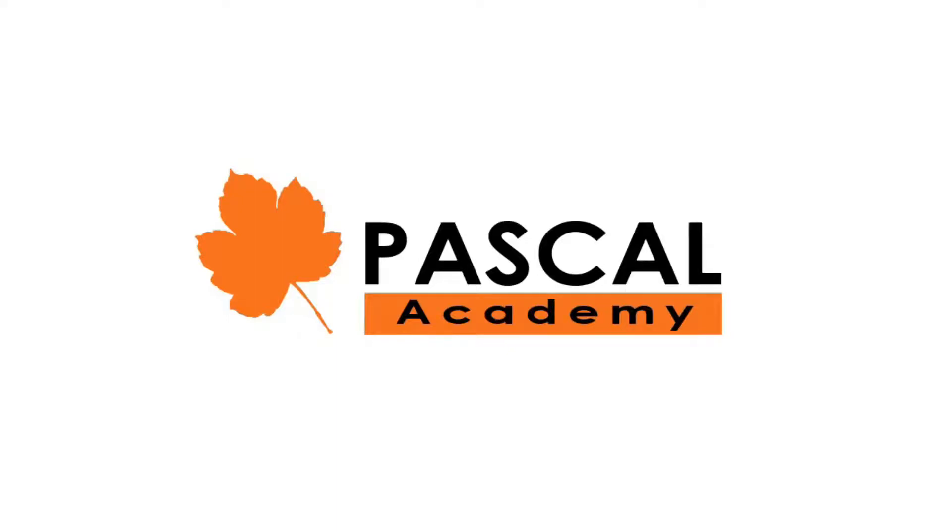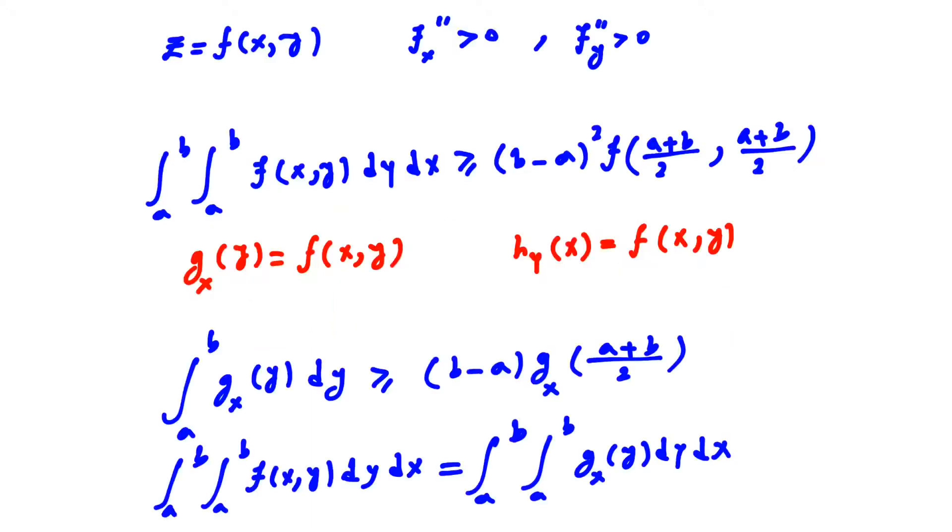In this video, we are going to use the Hermite-Hadamard inequality for convex functions. We prove that if z equals f(x,y) is a function whose derivatives with respect to both x and y are greater than zero,